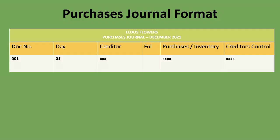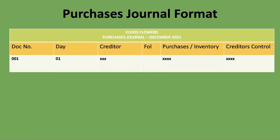The next column is the day — the day of the month the transaction took place. Then you have 'Creditor', sometimes written as 'Details' — this is the name of the creditor who sold the goods to you on credit. After that is the Folio column, which is a cross-reference code used for connecting two different records, but we leave this one out for now.